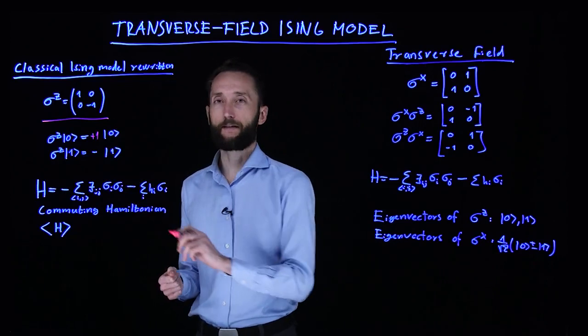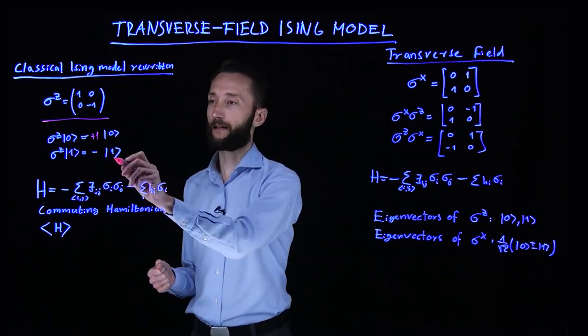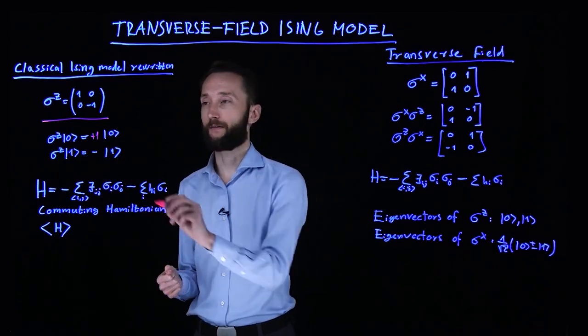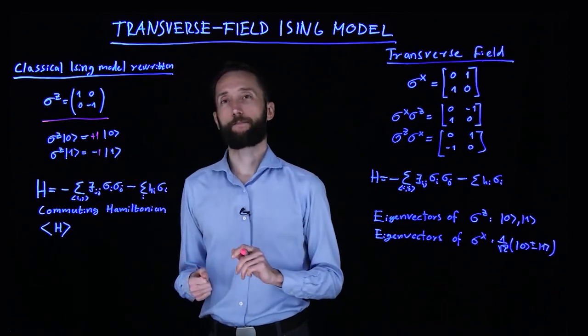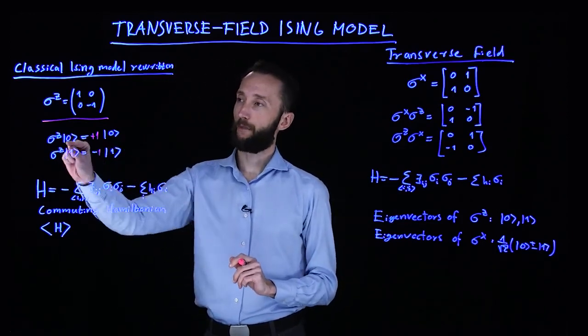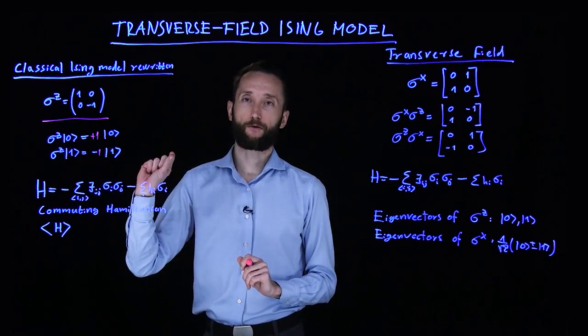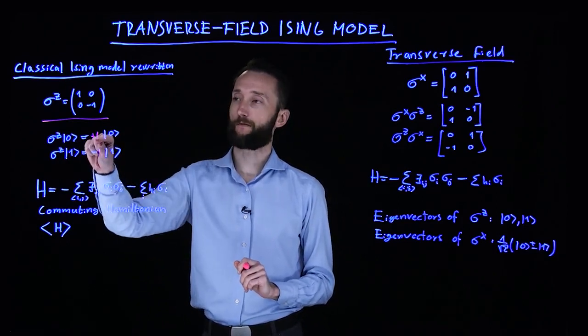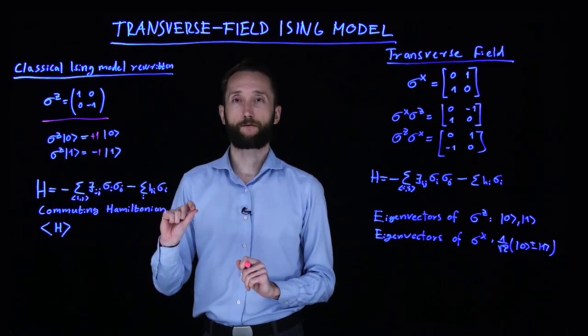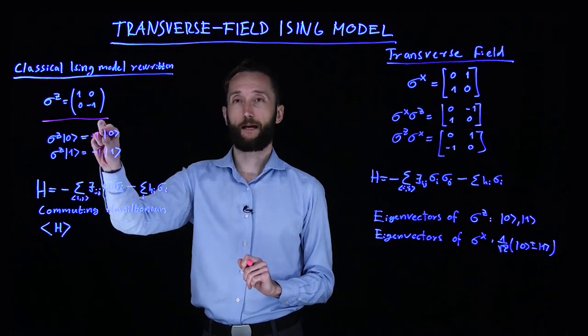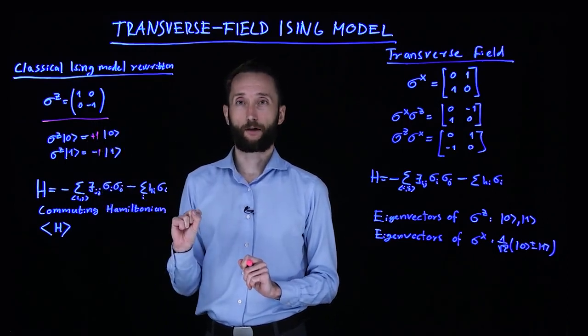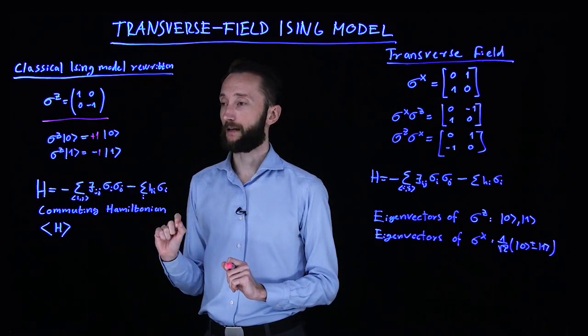If you apply it to the one ket, then the one ket picks up a minus sign. So basically it applies minus one to it. By applying this operator on these two basis states, you can reproduce the effect of getting plus one or minus one as a probability amplitude before the actual state.